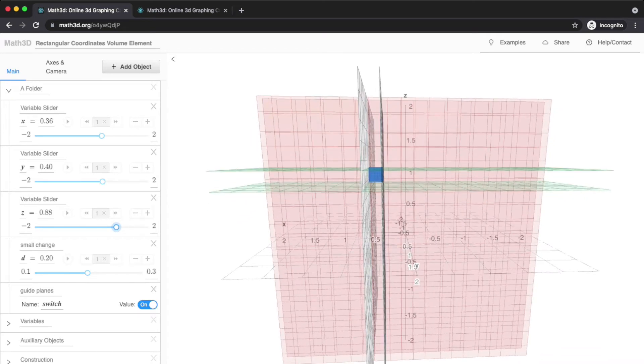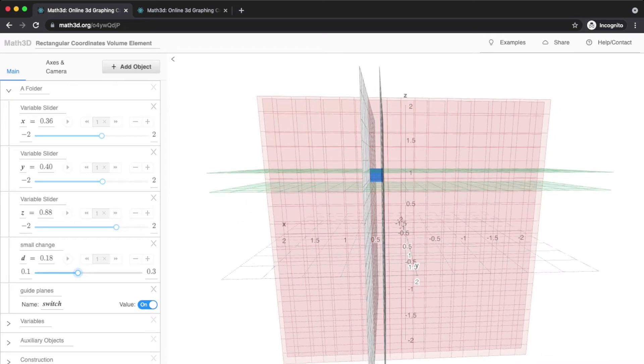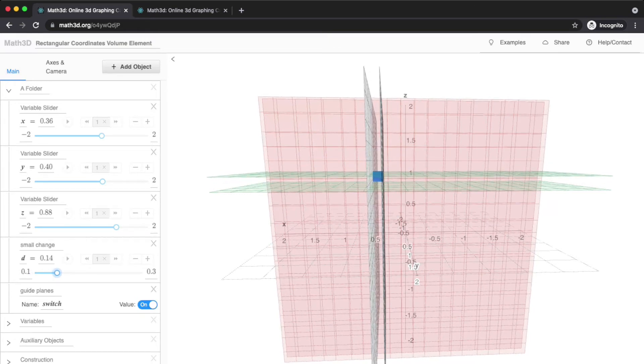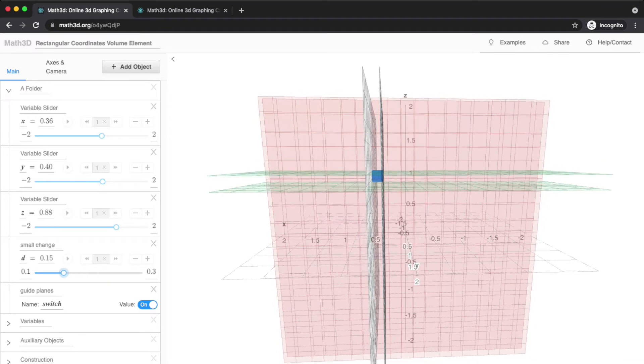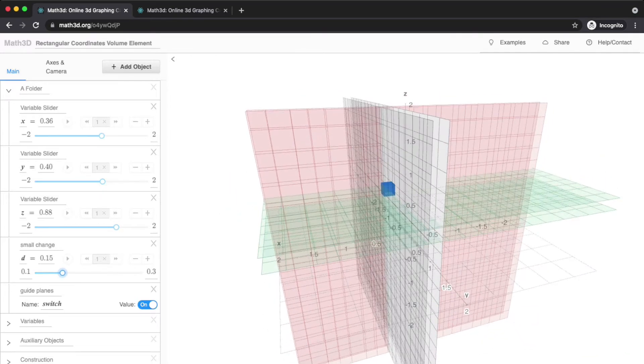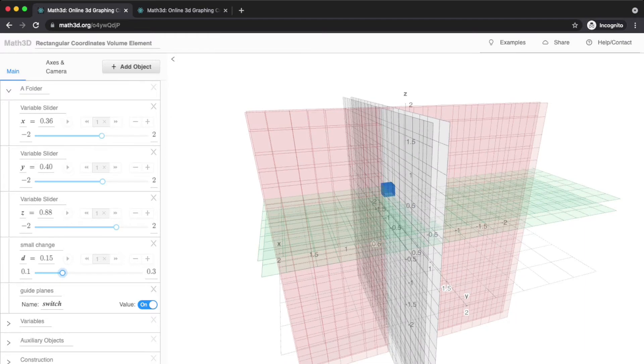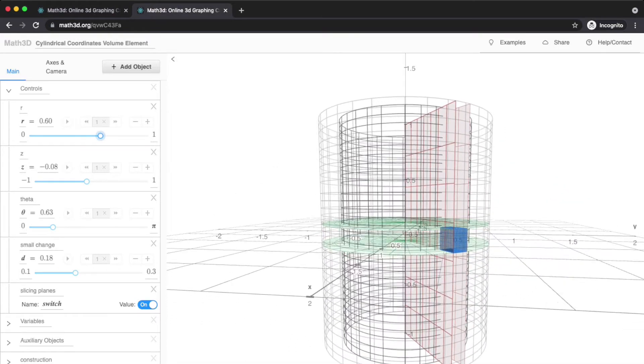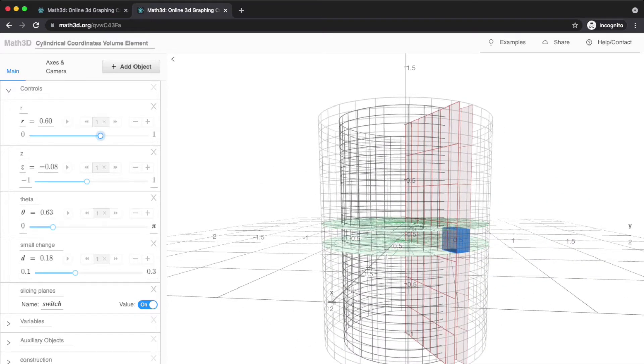It doesn't depend on X. The volume doesn't depend on Y. It doesn't depend on Z. What it does depend on is the D values, the differentials, the DX, the DY, and the DZ. If we shrink the distance between the two, so change DX, DY, or DZ, that's the thing that changes the size of the box. The volume element for this is just DX times DY times DZ.